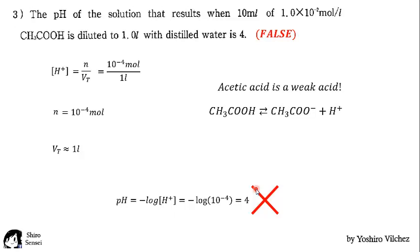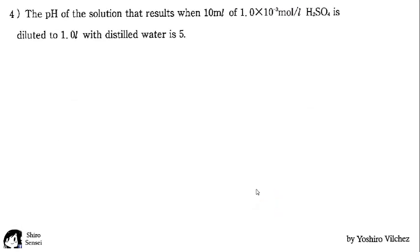The last one says, the pH of the solution results when 10 milliliters of 10 to the minus 3 mole per liter of sulfuric acid is diluted to 1 liter with distilled water is 5.